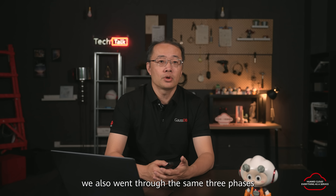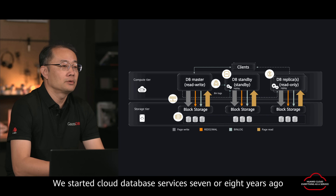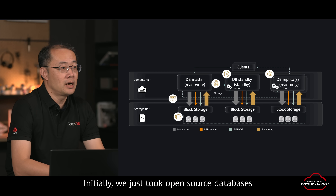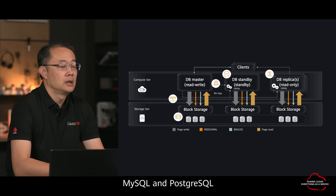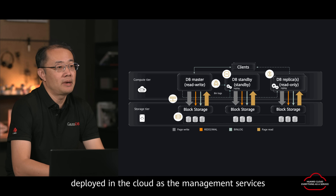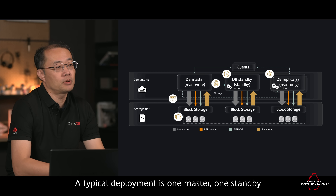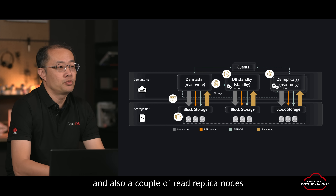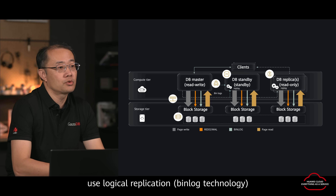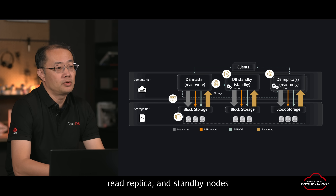In Huawei, we actually also went through the same three phases. We started cloud database services seven or eight years ago, initially taking open source databases — MySQL, PostgreSQL — and also our homegrown enterprise database, GaussDB, and deploying them to the cloud as managed services. In this deployment, a typical setup is basically one master, one standby, and a couple of three replica nodes, running within VMs and using remote block storage. MySQL uses logical replication bin log technology to do replication between the master, replicas, and standby.